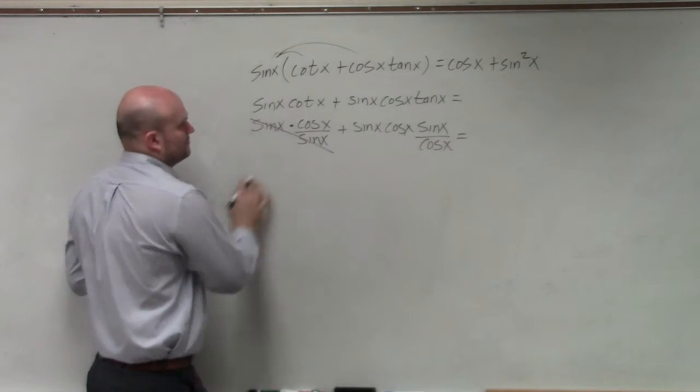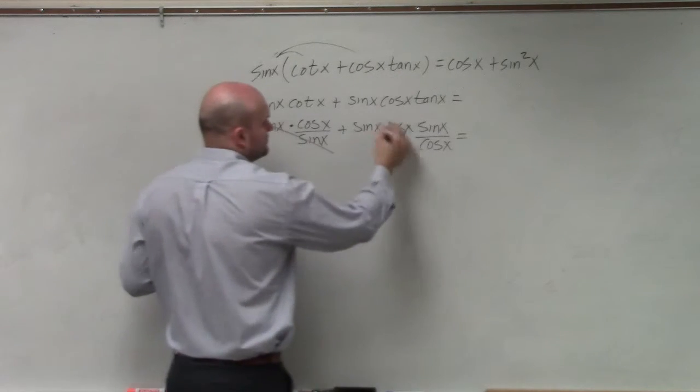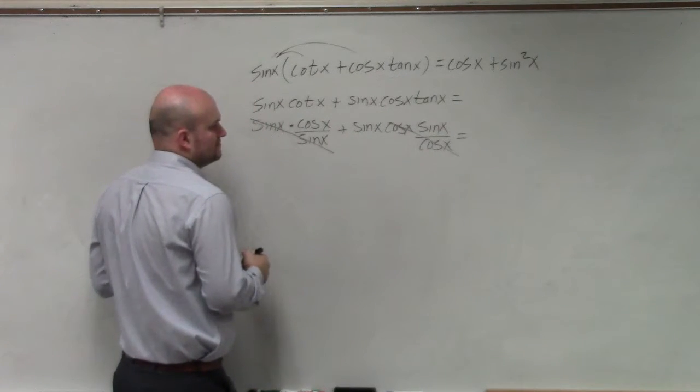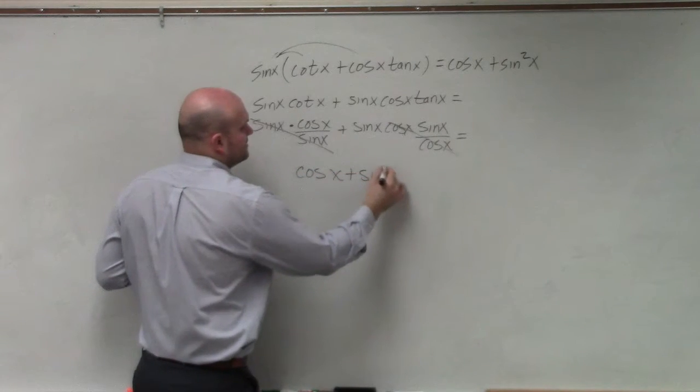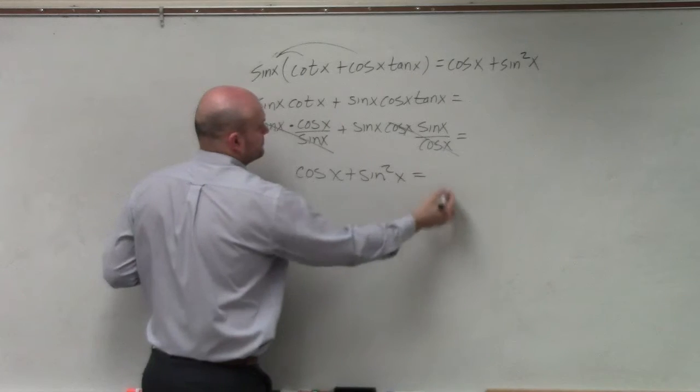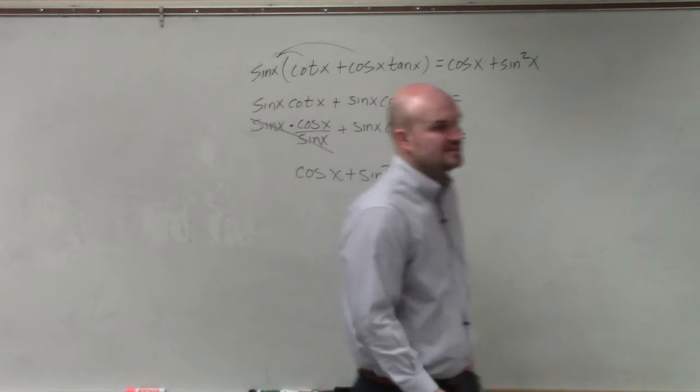And when doing that, sine divides out, cosine divides out, and I'm left with cosine of X plus sine squared of X. And you can see that's equal to the right side.